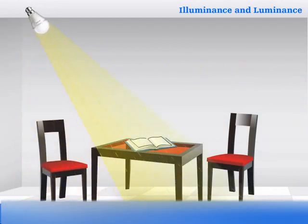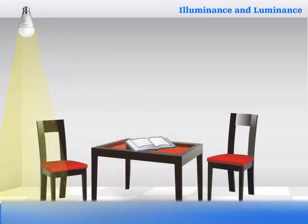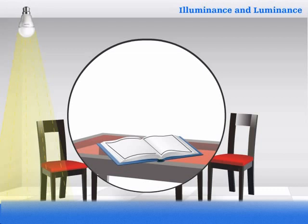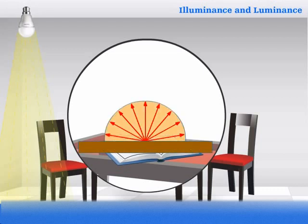It only depends on the amount of light falling on that surface. For perfectly diffusing surfaces, a relationship exists between the Illuminance on the surface, the surface reflectance, and the Luminance of the surface. Reflectance refers to the fraction of incident light that is reflected from a surface.